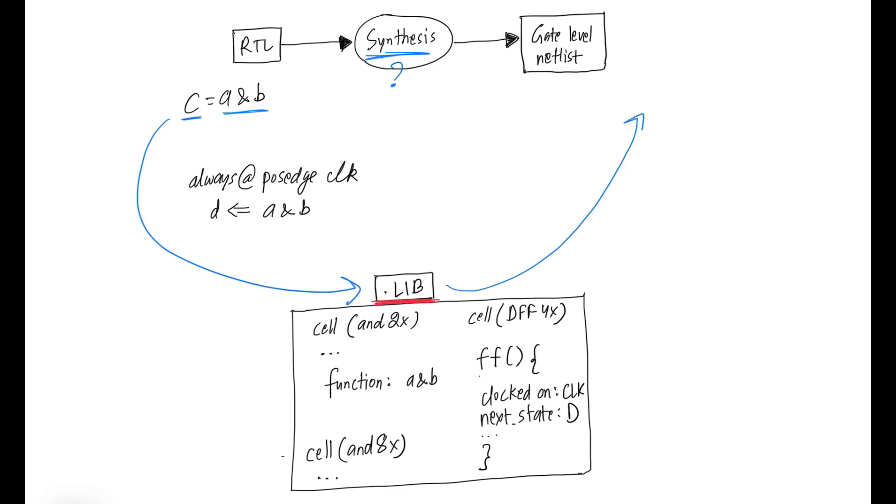So in the .libs, any combinational cell will have an attribute called function, which will basically define what that cell does. So based on this function attribute, the synthesis tool knows that this is an AND gate and it can be used to map the expression in the RTL like this.